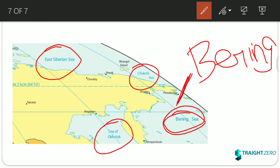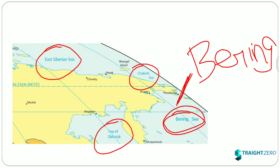One more important sea here is the Sea of Okhotsk. That is it for this lecture. Please mention in the comments if you want an MCQ series based on all three lectures of important seas — I will make it for you. Thank you for watching, have a great day.